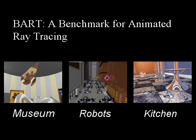Here, we apply our algorithm to BART, a benchmark for animated ray tracing. The benchmark consists of three scenes: museum, robot, and kitchen. They all contain a variety of object animations and a significant amount of reflections and refractions. Our method can handle all these.